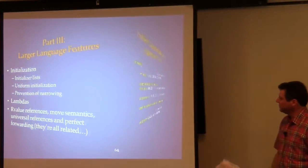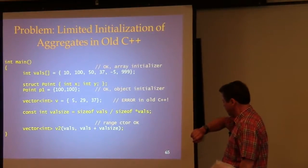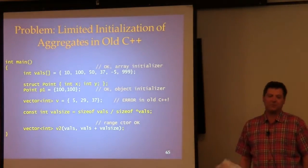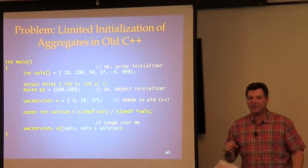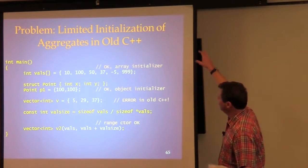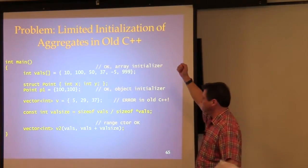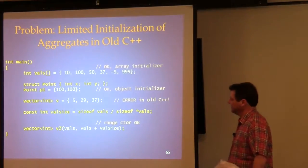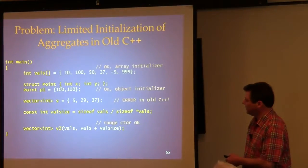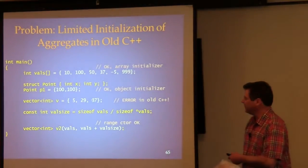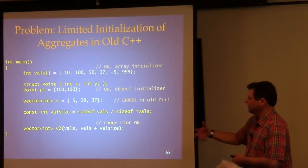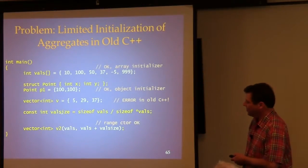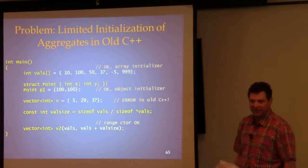Moving on to initialization. In C and C++ you can initialize an array of built-in types, and if you have a struct you can initialize its members. Unfortunately, you could never initialize an STL container using braces in old C++ — it just wasn't supported. That means you had to do this kind of craziness: create a variable with the size of an array, initialize from it, then copy all that stuff into the vector.